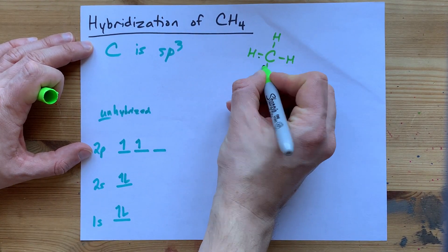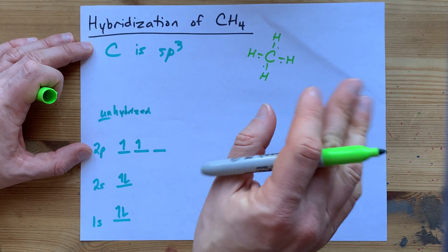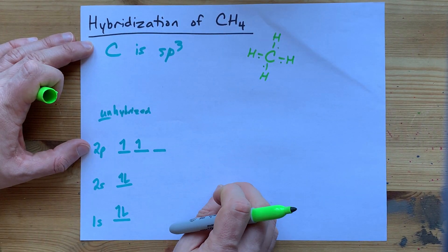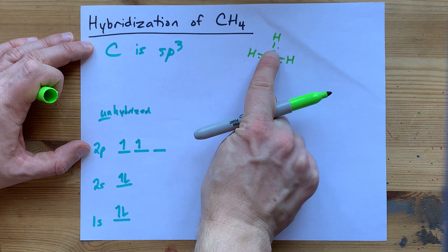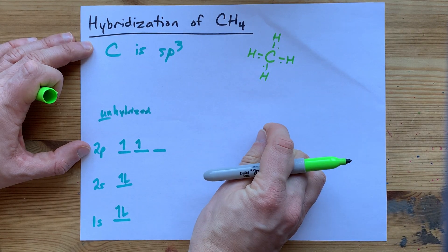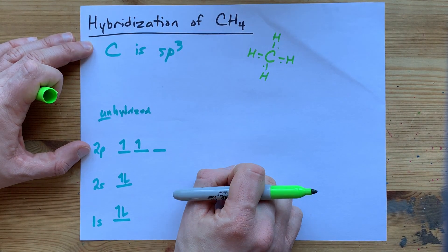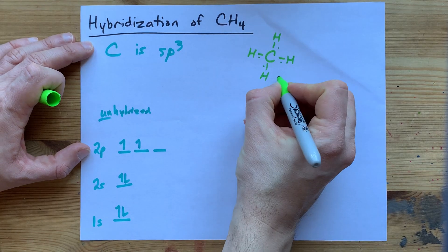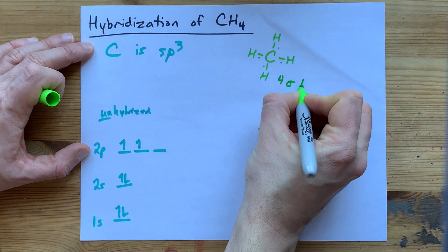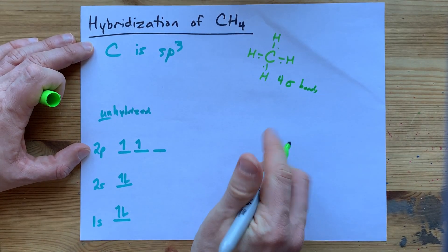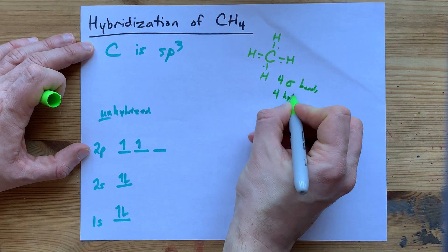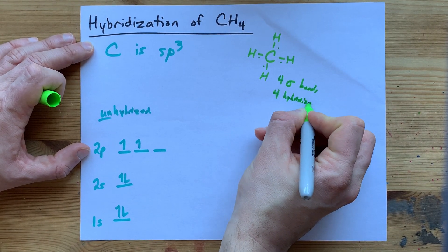But what you need is four equivalent sigma bonds. Every single bond between two atoms is a sigma bond. Because we need four sigma bonds coming from this carbon, we need four hybridized orbitals.